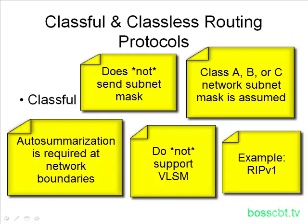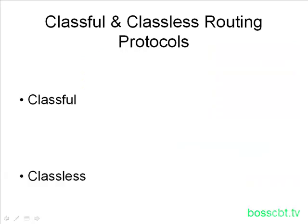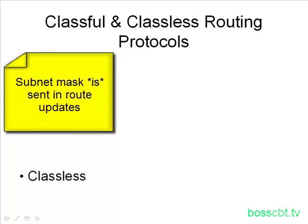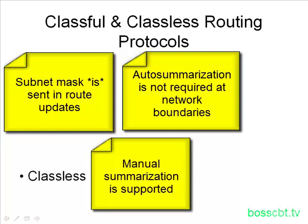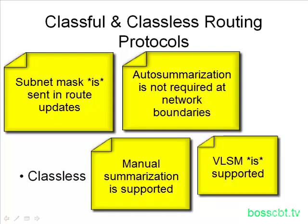This is different from a classless routing protocol. Classless routing protocols do send subnet mask information in their routing updates. That means routers using them do not have to make an assumption as to which subnet mask is used, because they have actually received that information. Classless routing protocols are not required to use auto-summarization — in fact, manual summarization is supported. Furthermore, because subnet mask information is sent along, classless routing protocols support variable-length subnet masks, or VLSM.